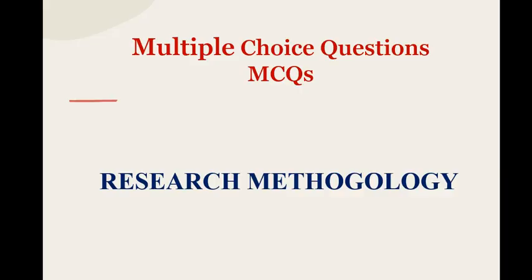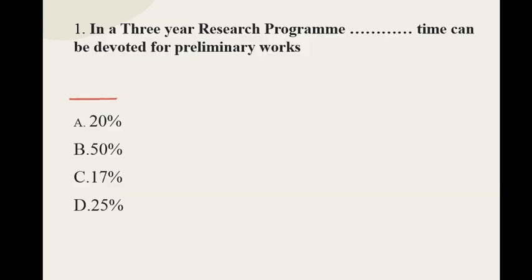Here we are going to discuss 25 MCQ questions based on research methodology. Question number one: In a three-year research program, dash percent of time can be devoted for preliminary works. The options are 20%, 50%, 17%, and 25%. The correct option for question number one is 17%.